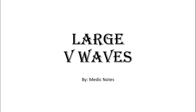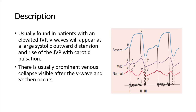Welcome back to another video of Medic Notes. This video is on large V-waves. Large V-waves are usually found in patients with an elevated JVP. They appear as a large systolic outward distension and rise of the JVP with carotid pulsation. There is usually prominent venous collapse visible after the V-wave and the second heart sound then occurs.